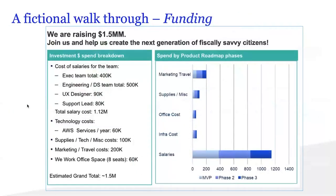The funding slide is why you built the deck. You can put it right up front — 'We are Homer and we're raising $1.5 million. Join us and help us create the next generation of fiscally savvy citizens' — or use it as a later slide. This helps investors know how you plan to use that money and over what period of time. It's broken down by team salaries, technology costs, SG&A costs, and aligned with phase one, phase two, and phase three of the product development roadmap — true transparency in how VC money will be spent.